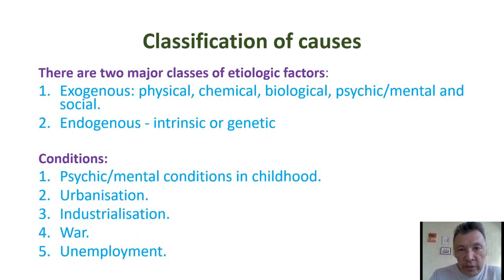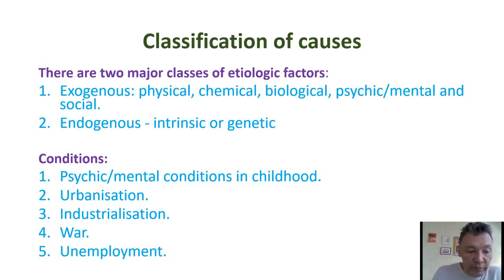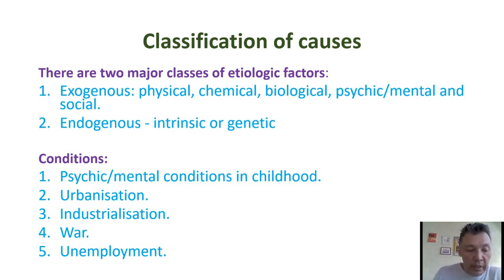Classification of causes: there are two major classes of etiological factors — exogenic and endogenic — and five conditions: physical, mental, urbanization, industrialization, war, and unemployment.